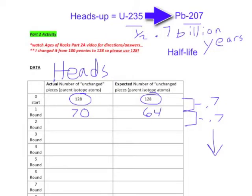After round two, you had 70 pennies that were heads-up to start with. Perhaps at round two we have, let's say, 32 pennies remaining that are still heads-up. How many would you have expected? I'm going to take half of 64 for my expected column, so that would be 32. So I'm exactly at what I would have expected. Place the remaining 32 heads-up pennies back in the container and shake them again for round three.